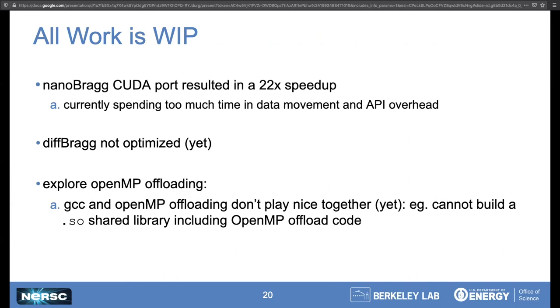All work is work in progress. Our nanoBragg CUDA port has resulted in a decent speedup, but if we improve data movement and API based on what we're observing, we can definitely get way more out of it. Next on our plate is optimizing the diffBragg iteration itself. Finally, we want to look at OpenMP offloading, but there are some issues associated with the fact that Python and our software stack likes GCC, which has some problems playing nice with OpenMP at the moment. I'd like to thank you all and I'd love to answer your questions.